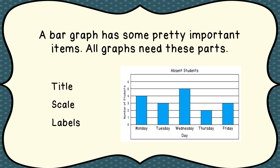And we need to have labels. These bars wouldn't mean very much if we didn't have labels on them to tell us what each one is worth. Because we're talking about absent students, we're going to label them Monday, Tuesday, Wednesday, Thursday, Friday, so that people looking at your graph know what each one of those bars means. We also put labels to tell us the day and, over here, what the numbers represent — number of students. So make sure you have a title, a scale, and your labels.